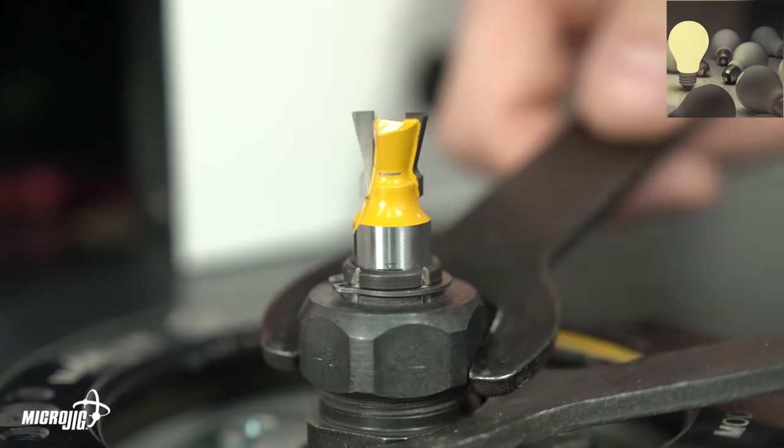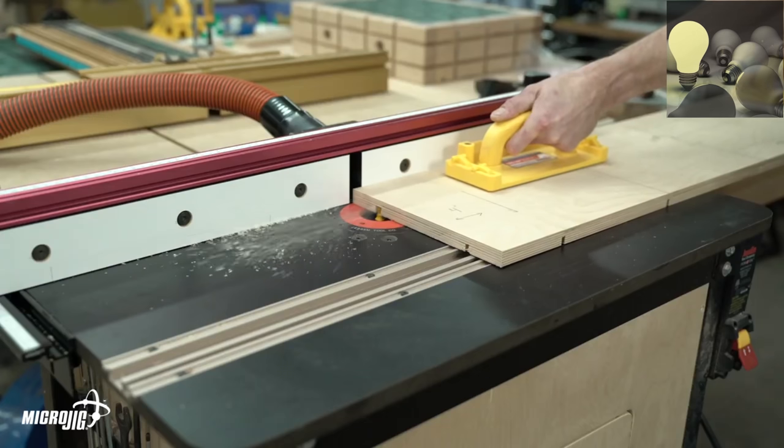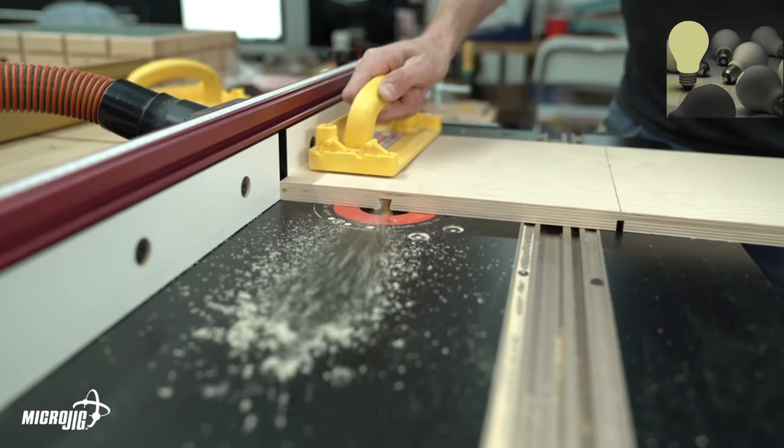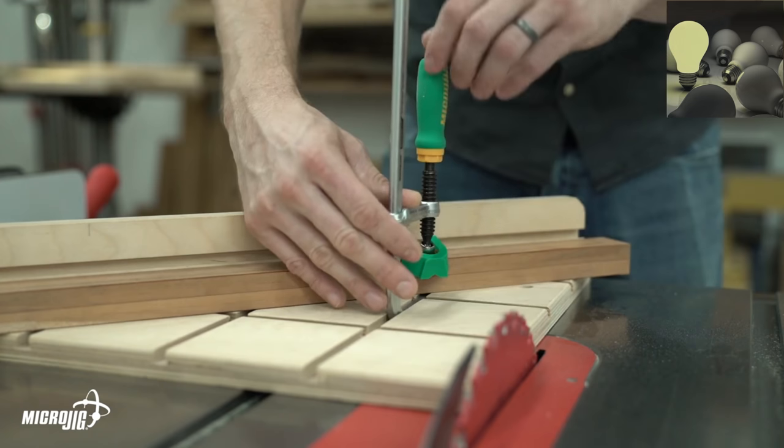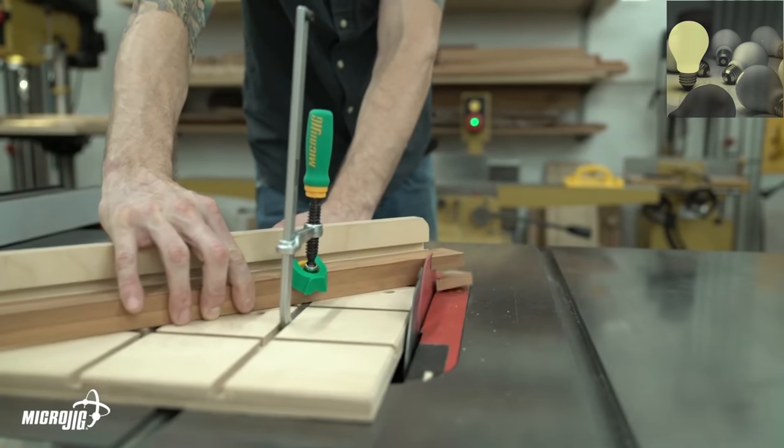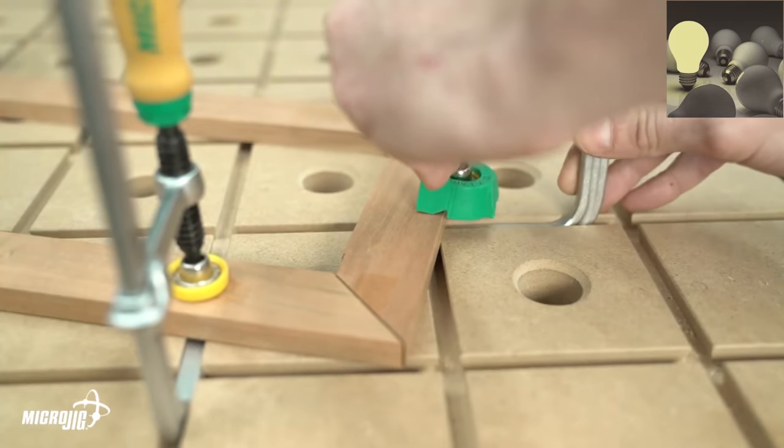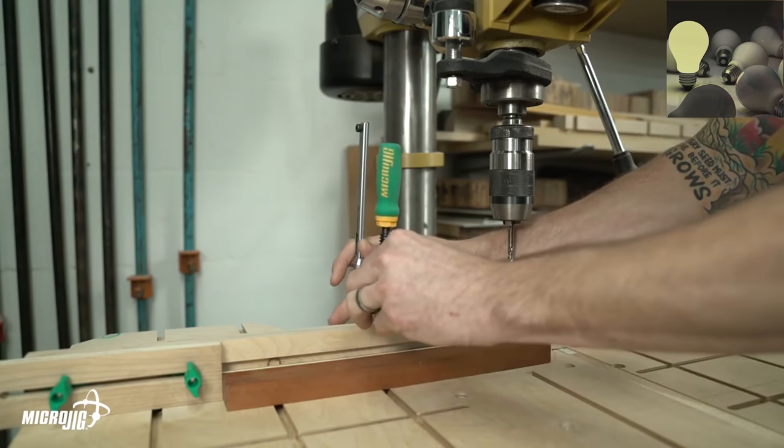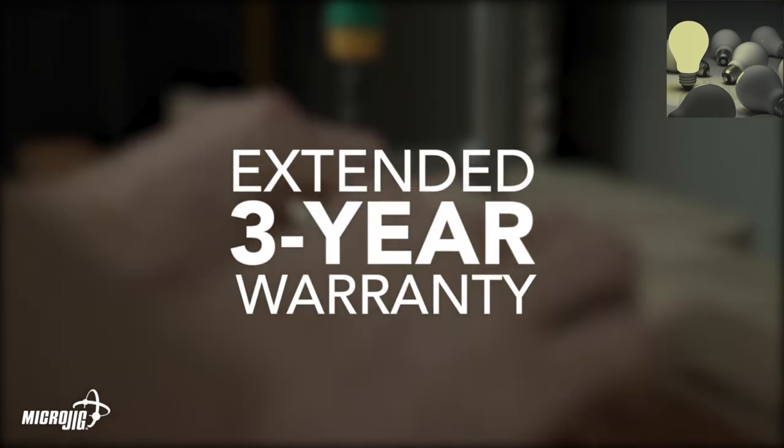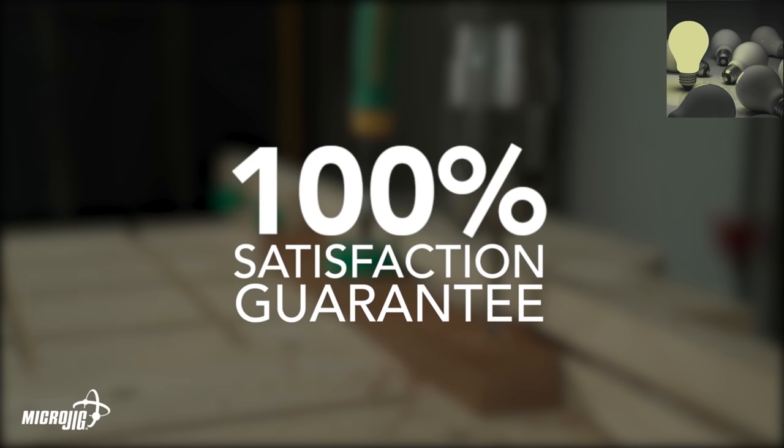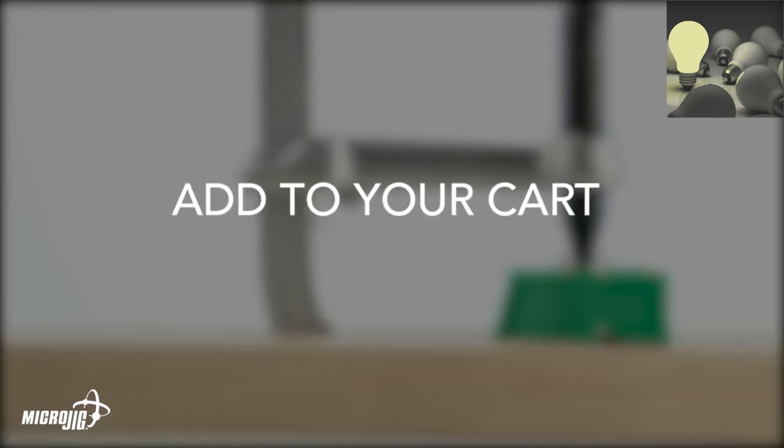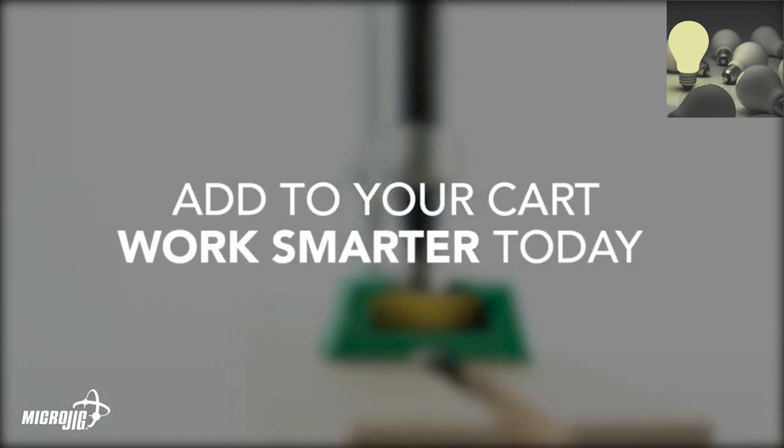No other system gives you the flexibility to create your own tracks where and when you need them. For jigs, fixtures, and assembly, there really is no substitute. Join the thousands of craftsmen who are already working smarter with the Matchfit system and never buy another inch of T-track. Matchfit Dovetail Clamps are backed by our extended three-year warranty and 100% satisfaction guarantee. Add to cart and start working smarter today with the Matchfit Dovetail Clamp AP.